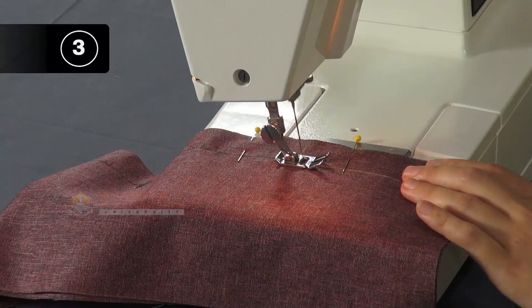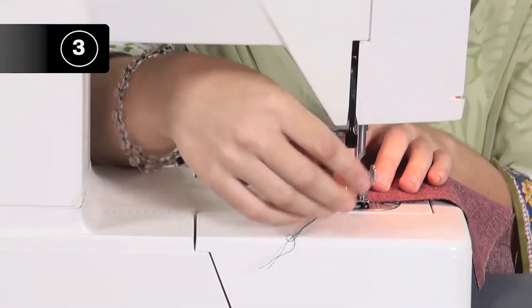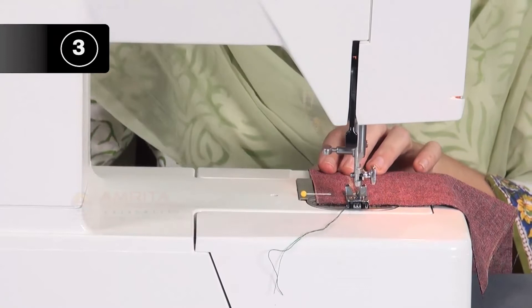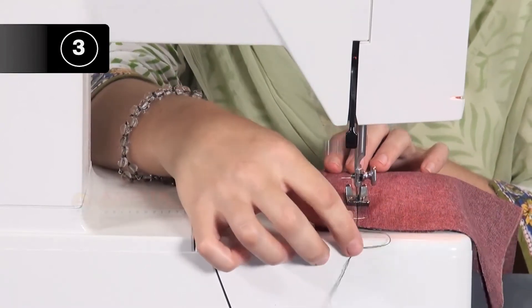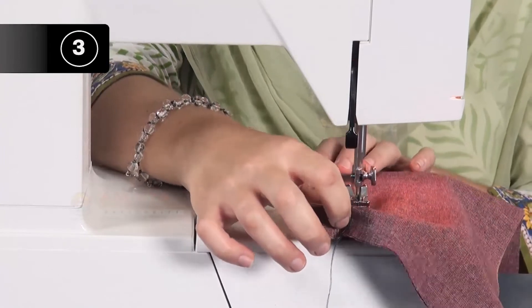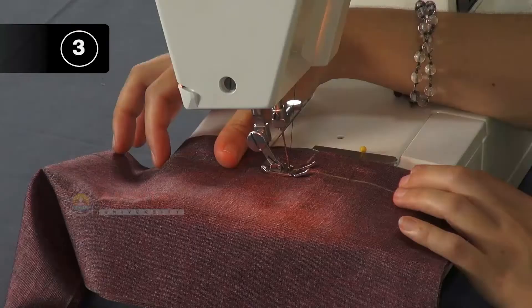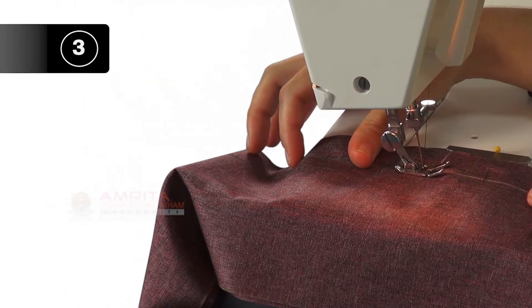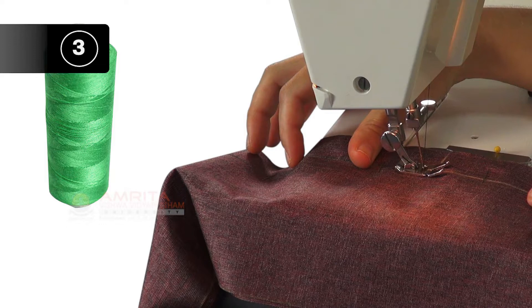Step 3: Stitch the pieces of fabric. Start with the reverse stitch to prevent the seam from opening. Stitch along the seam line with a long stitch length up to the first marking of the zipper. Please note, here we are using a contrasting thread for demonstration purposes only so that it is visible, but otherwise one would use a thread matching to the fabric.